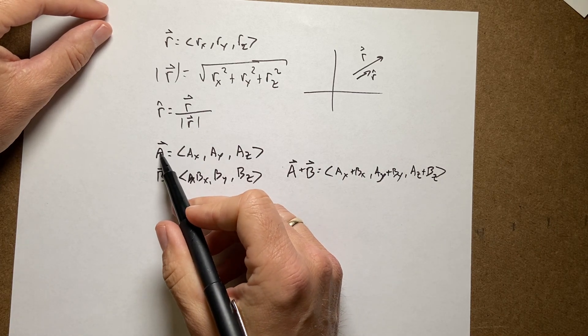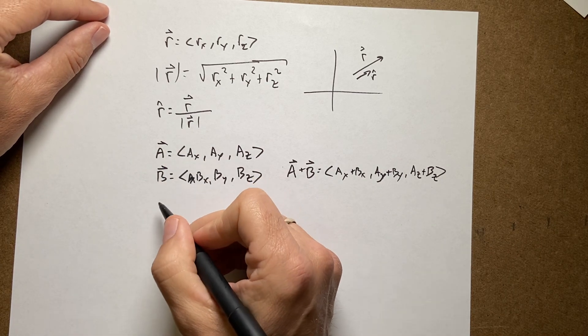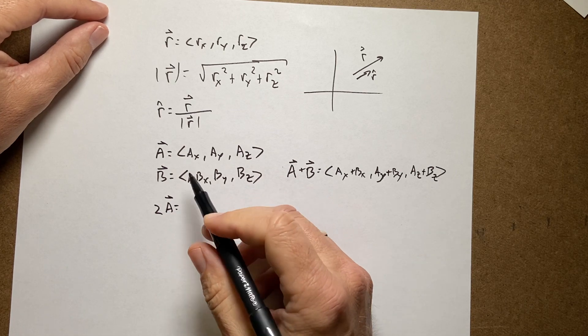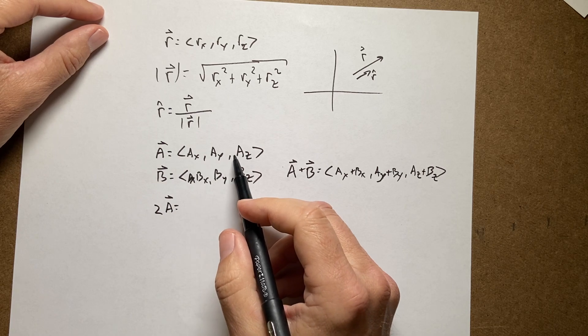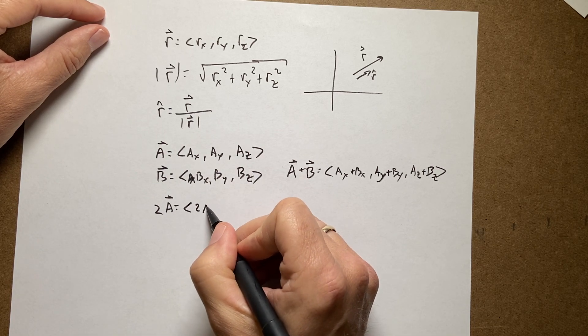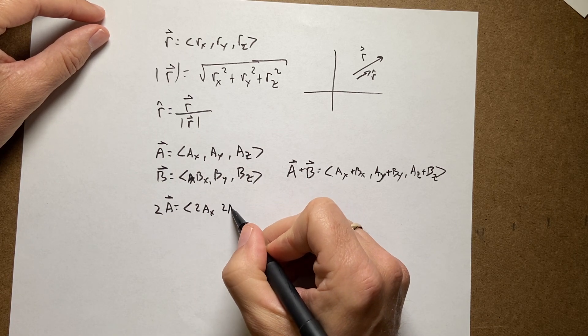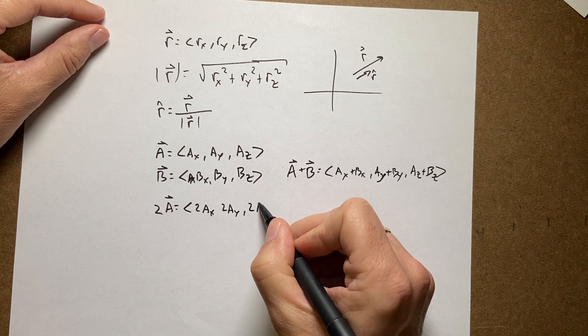What if I take this and multiply it by a number? What if I say 2a? That's just going to be that scalar value multiplied by each component. So it's going to be 2ax, 2ay, 2az.